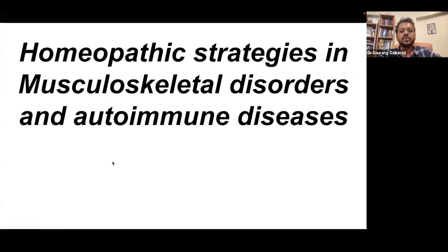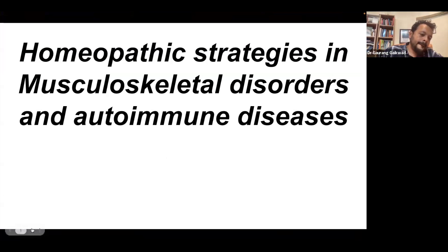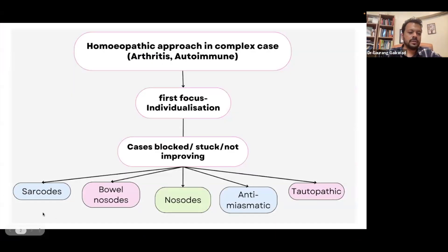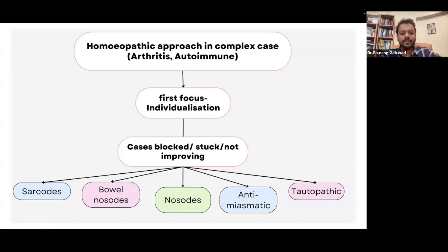The focus today is homeopathic strategies in musculoskeletal disorders and autoimmune diseases. Today's talk is more focused on the overall approach — this is a very interesting map that we have created — the homeopathic approach in complex cases, especially in cases of arthritis and autoimmune disorders.